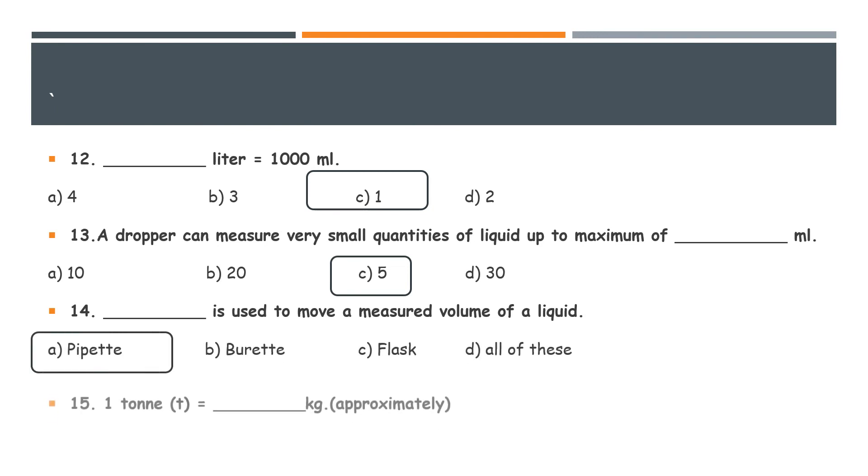The next MCQ is one ton is equal to blank kg approximately. And we know that the right answer is C option, 1000.